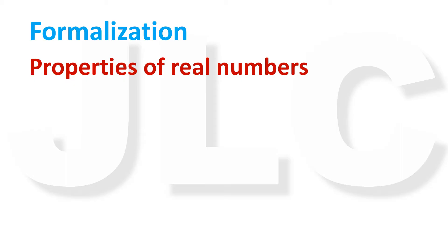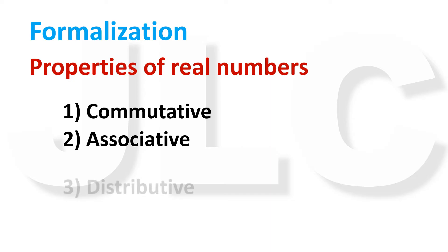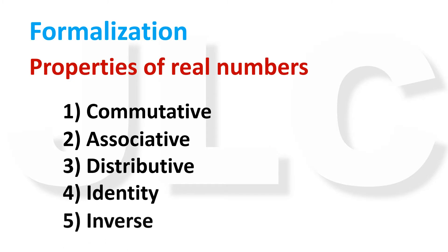Now let us formalize these common senses about real numbers. Real numbers have the following basic properties: commutative property, associative property, distributive property, identity property, and inverse property.